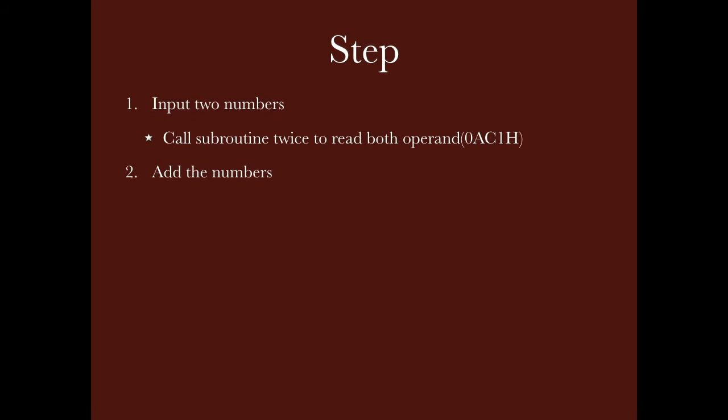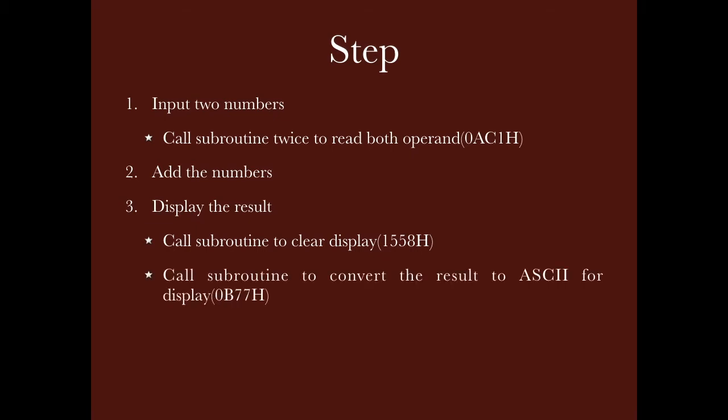The second step is to add these numbers using the ADD instruction. The third step is to display the result on the LCD screen. For display of the result, first we have to clear the display. A subroutine for clearing the display is written at 1558H, so we will call this subroutine. Next, the result available in the accumulator needs to be converted to its ASCII equivalent to be displayed, and for that purpose a subroutine is written at 0B77H.